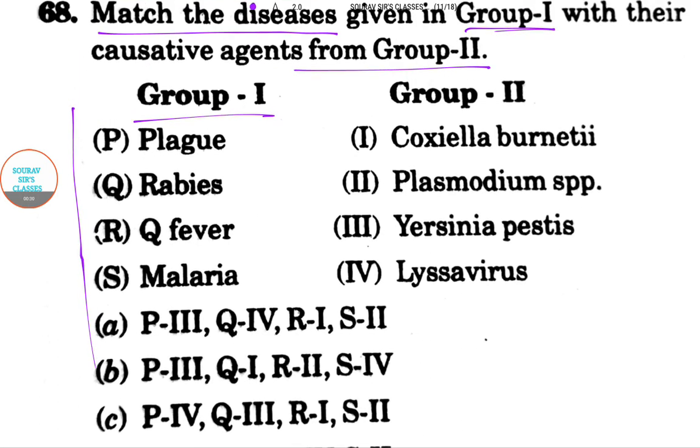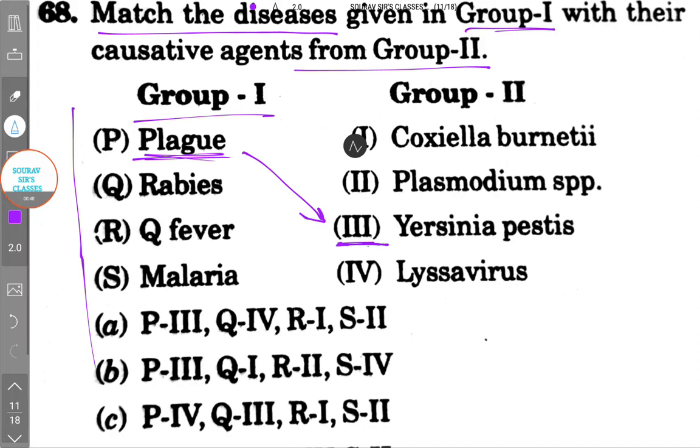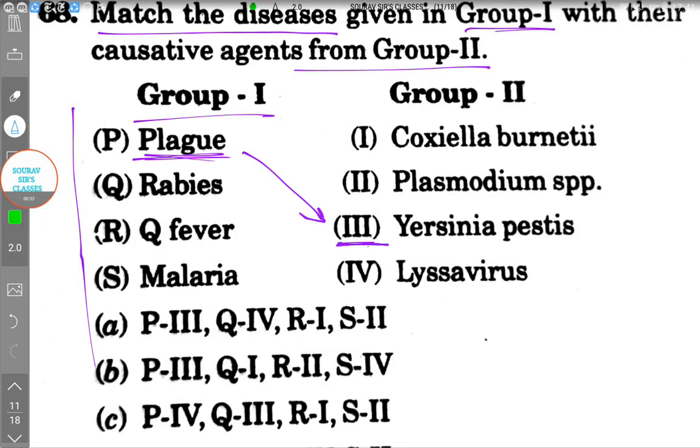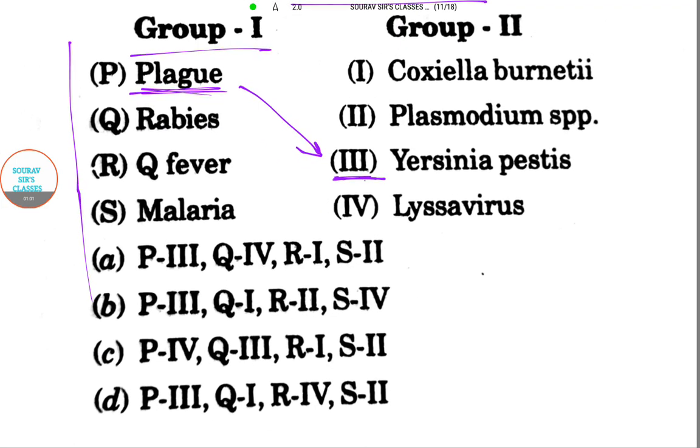Here, Plague is a disease that has causative agent Yersinia pestis, which is option III. I'm changing my pen color so it will look good and be more understandable as I pick up every answer.